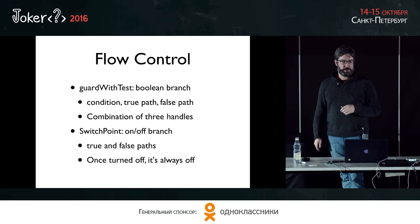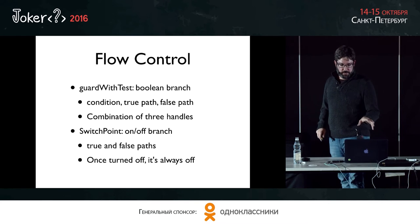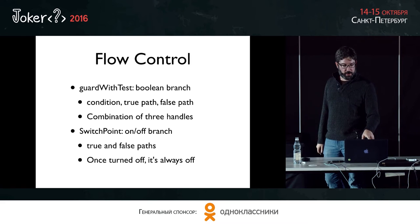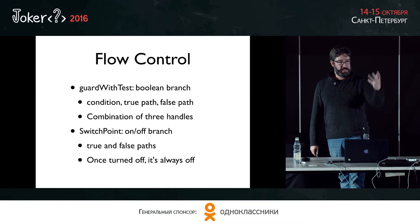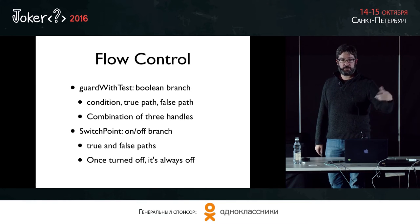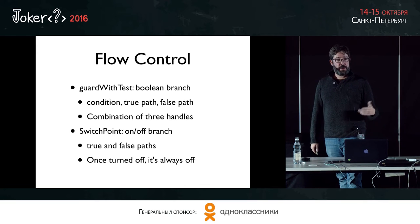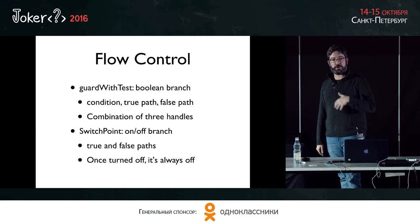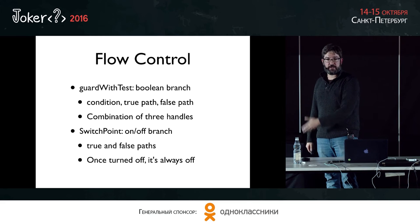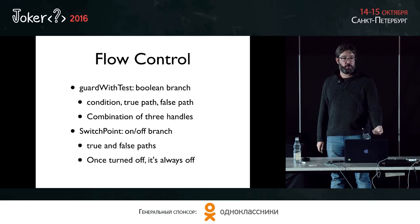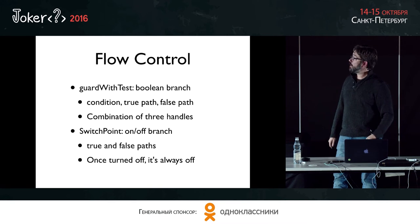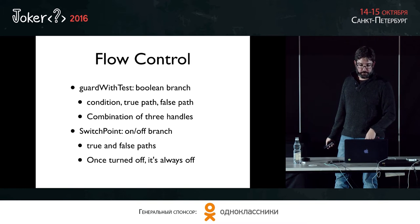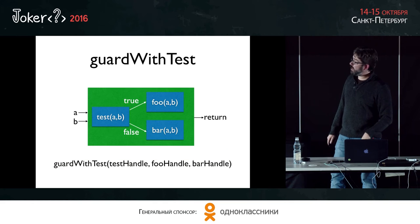Now let's look at flow control. The flow control features are guardWithTest — basically a boolean branch. You give it a test function that returns true or false, and depending on what it returns, it calls your true path or false path, your then or your else. A switch point is similar, but instead of a boolean method, it's just an on/off switch. Once you've switched it off, it stays off.